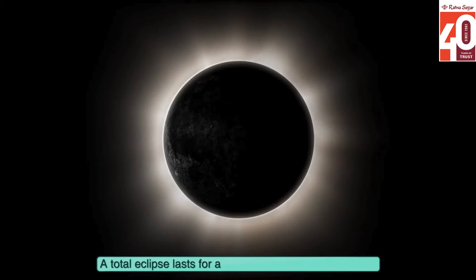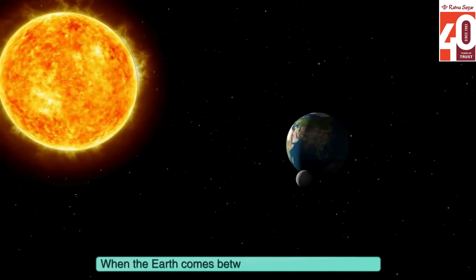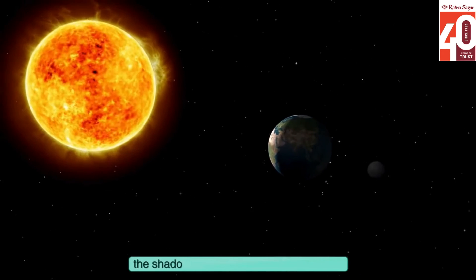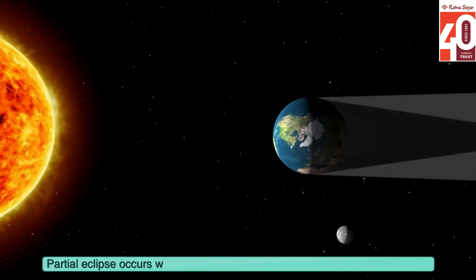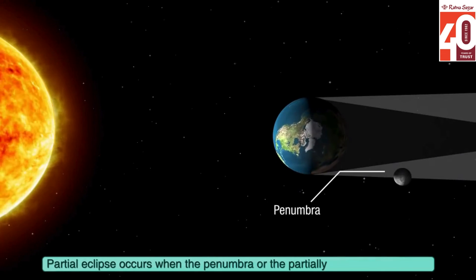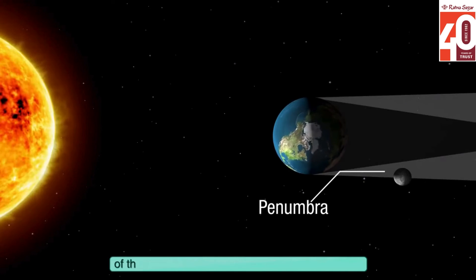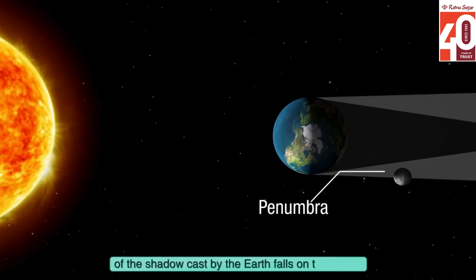When the Earth comes between the sun and the moon, the shadow of the Earth falls on the moon. Partial eclipse occurs when the penumbra, or the partially shaded outer region of the shadow cast by the Earth, falls on the moon.